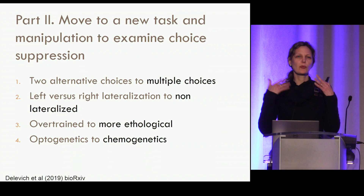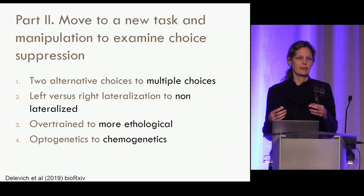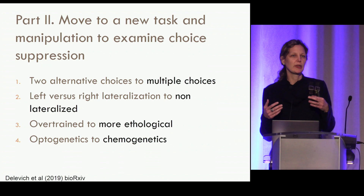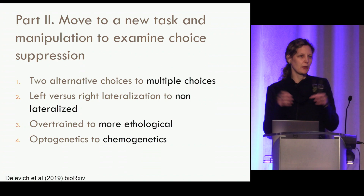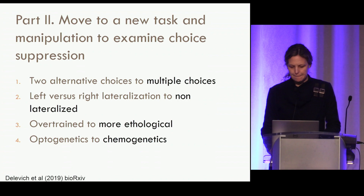We also moved from optogenetics to chemogenetics. Chemogenetics doesn't overwhelm neuronal activity — it amplifies or silences endogenous activity. With optogenetics we're overwhelming things and creating abnormally synchronous activity, which downstream circuits read out very differently due to the temporal synchrony of channelrhodopsin stimulation. The move to chemogenetics felt like a move toward more endogenous-like activity, which we hoped would better reveal the function of these neurons.